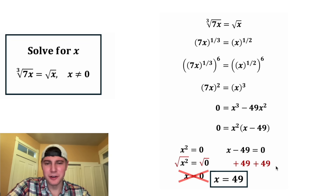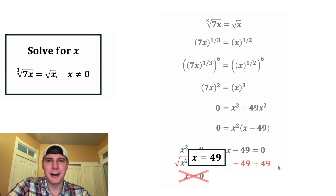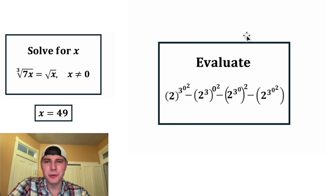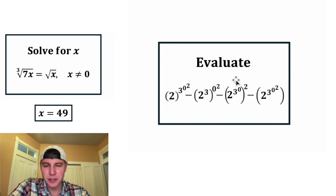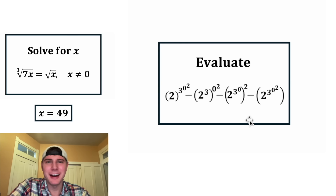So this was kind of a fun one. How exciting. And here's tomorrow's question: the quantity 2 to the 3 to the zero to the two, minus the quantity 2 to the 3 whole thing to the 0 to the 2, minus the quantity 2 to the 3 to the 0 whole thing squared, minus the quantity 2 to the 3 to the 0 to the 2. This looks like a fun one. How exciting.